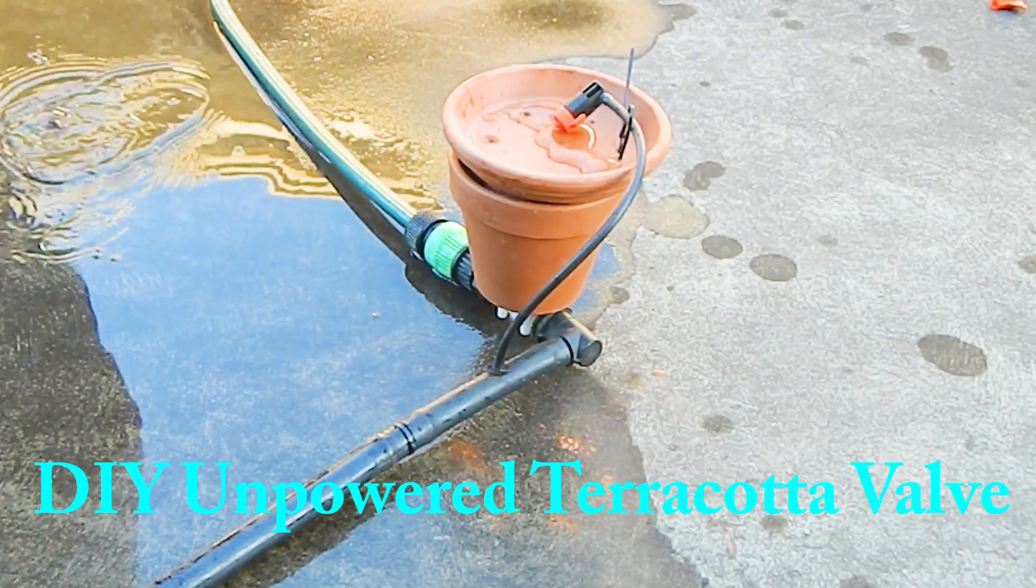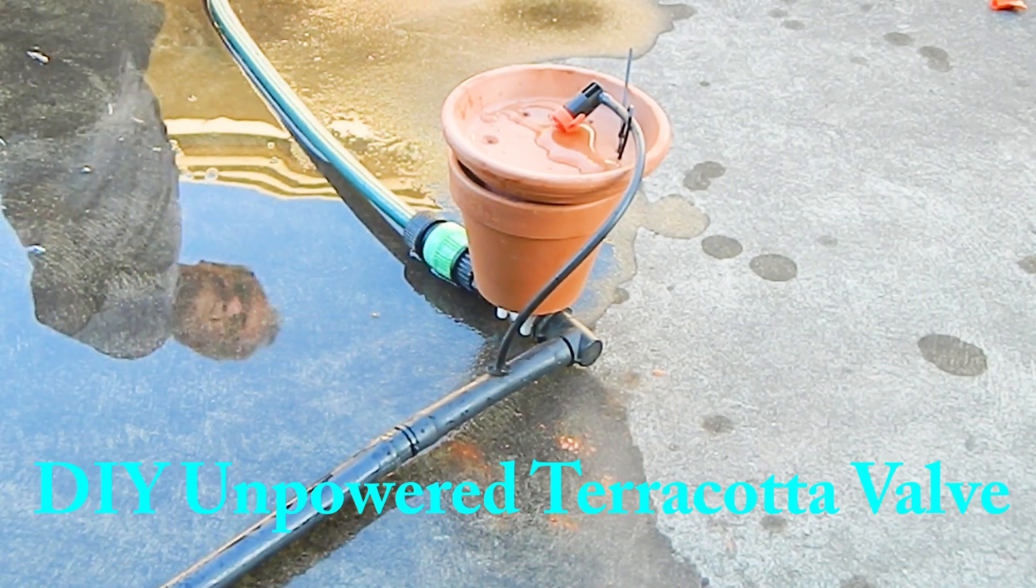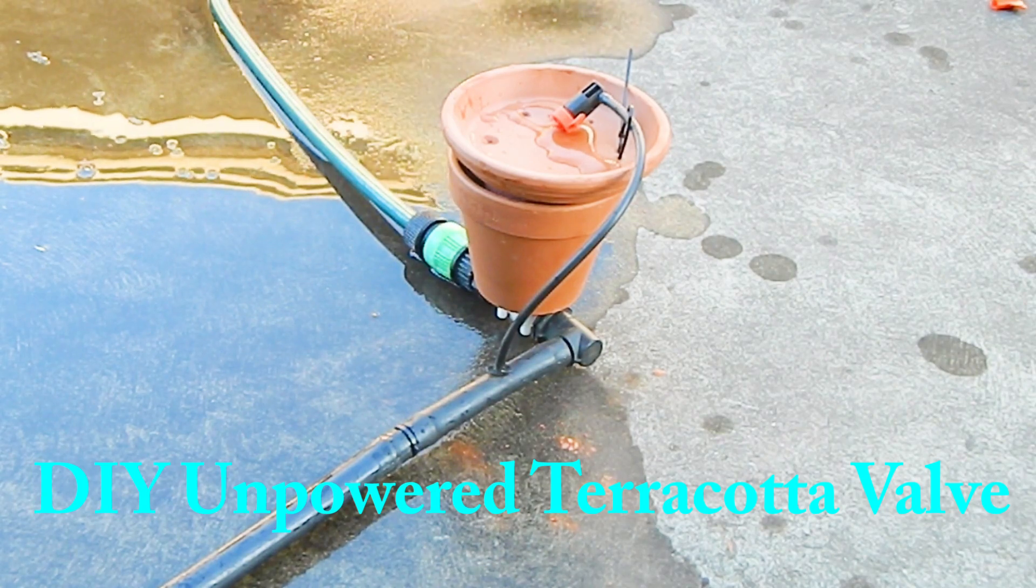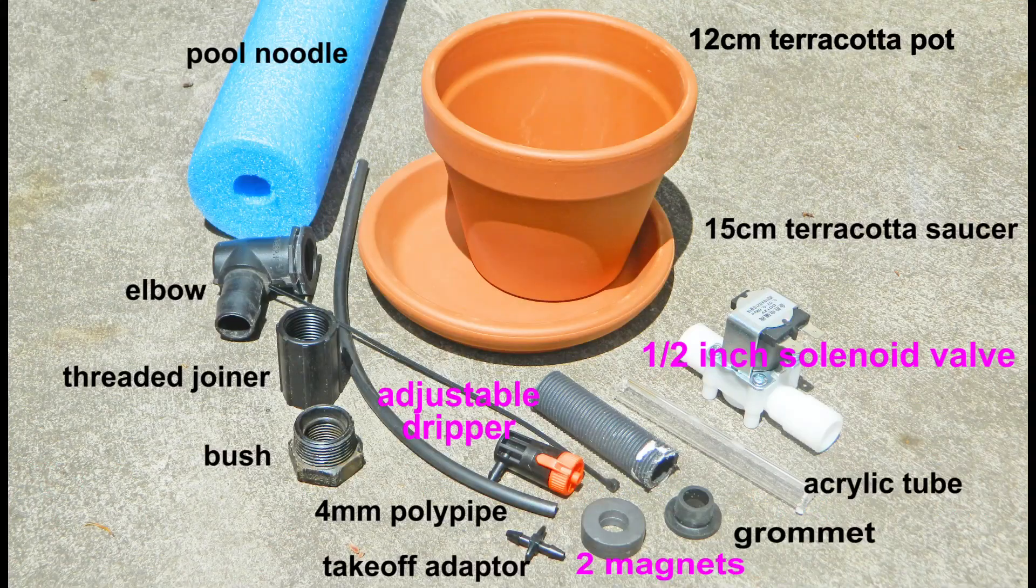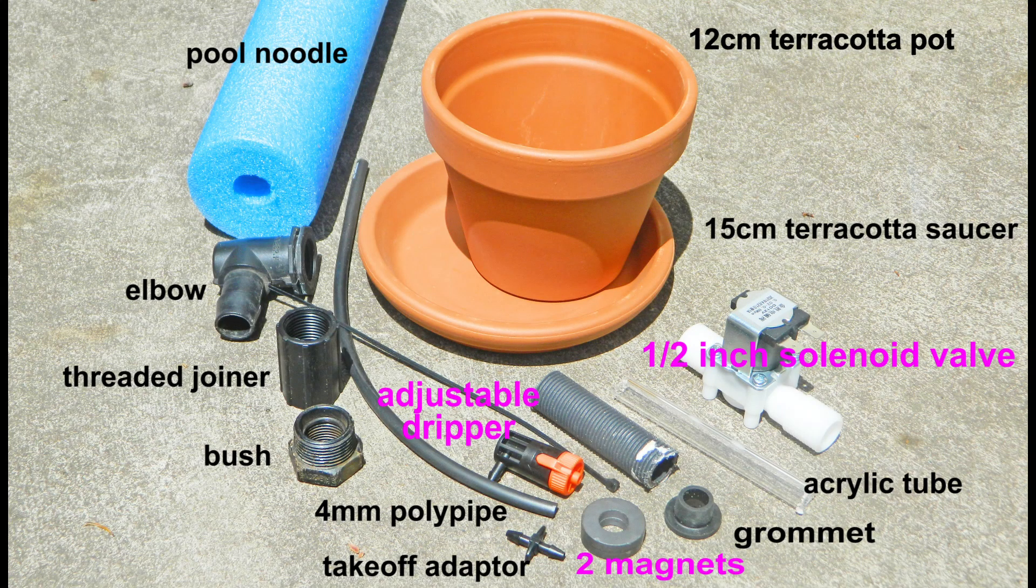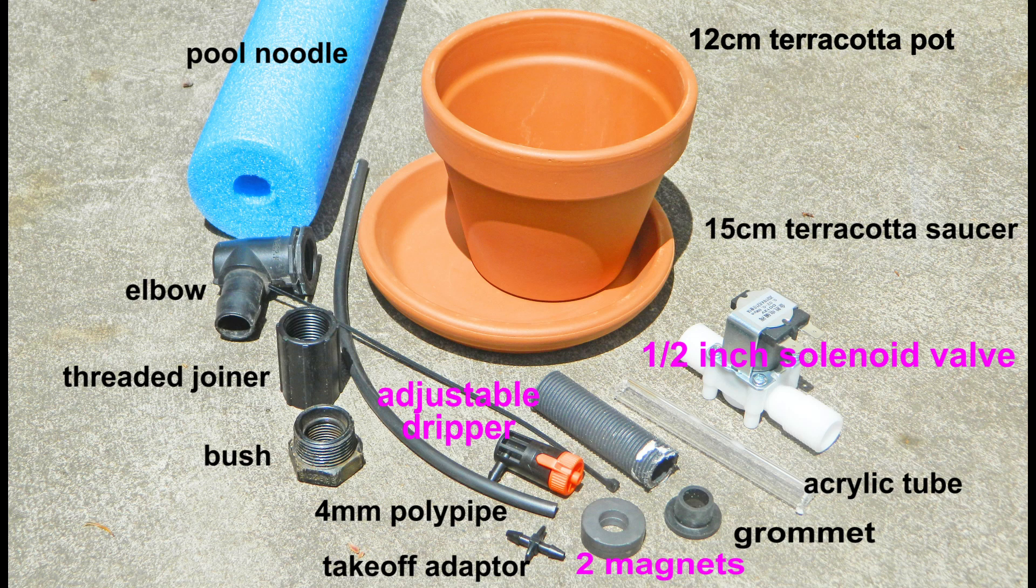This video shows you how to make an unpowered terracotta valve using components bought from local shops or the internet. For example, a half inch solenoid valve, two ring magnets, and an adjustable dripper.